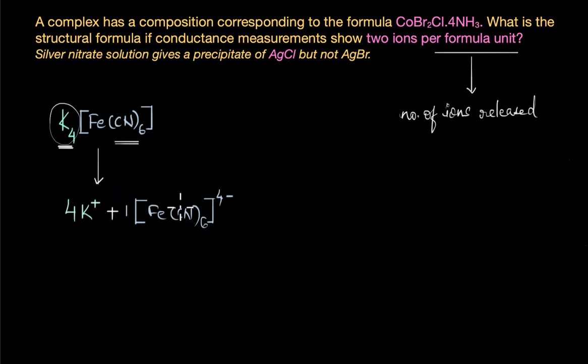So basically what can we infer from here? By observing how many ions the complex produces, we can figure out which atoms or groups are ionizable and which are non-ionizable or remain coordinated to the central metal ion. Now in our question we have 2 ions that are formed per formula unit, which means the compound dissociates into 2 separate ions in solution.